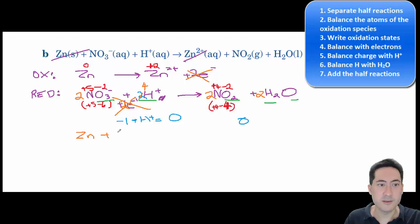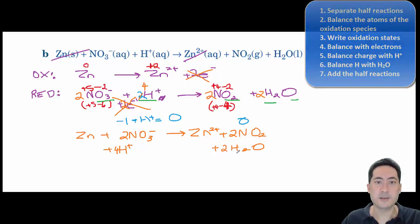Put the states that were up here back in there. I'm just going to leave them out for simplicity. Plus four H+ gives what's over there: Zn2+ plus 2NO2 plus 2H2O. And that's the second one balanced out.